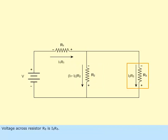Voltage across resistor R sub 3 is I sub 2 R sub 3.